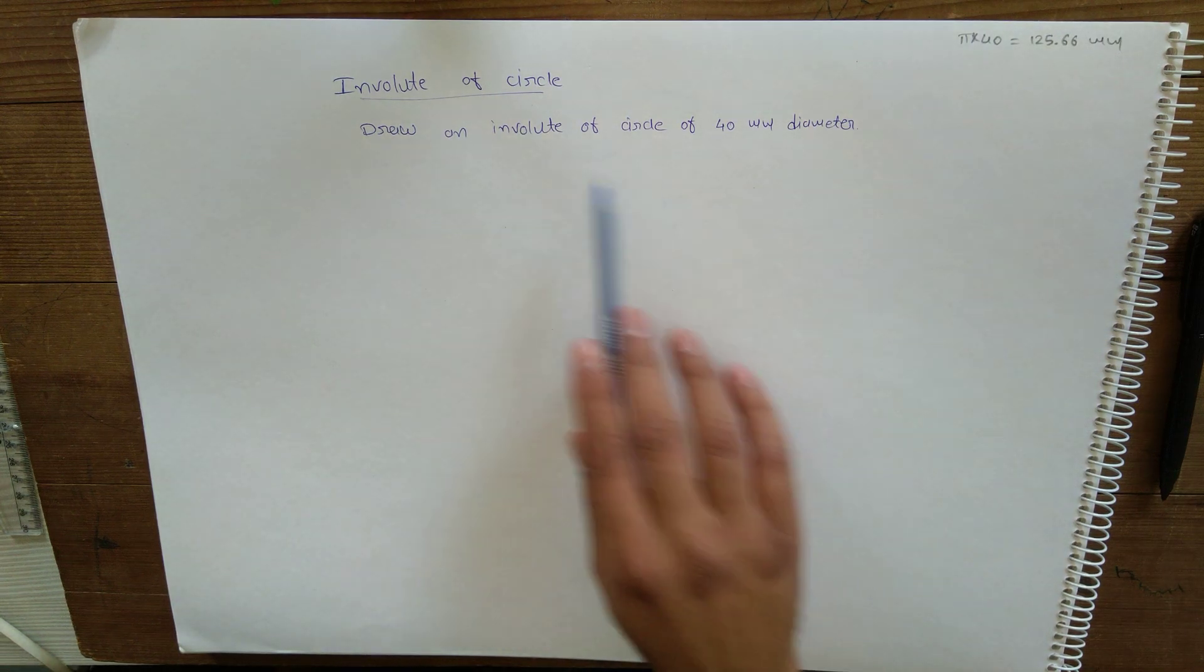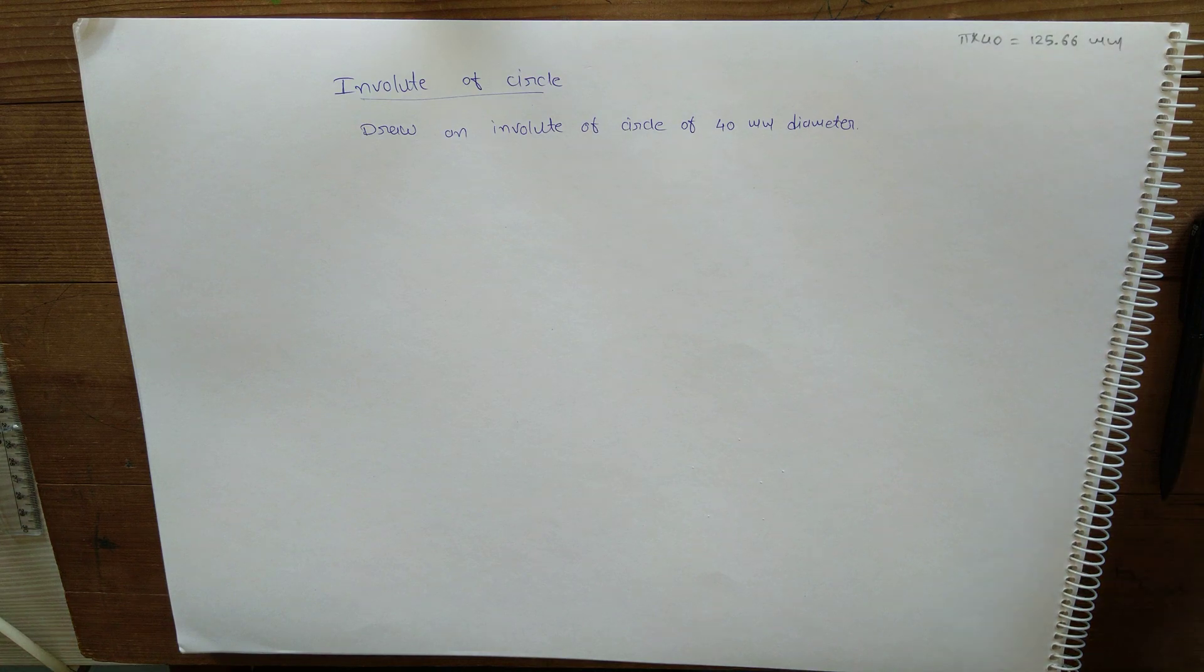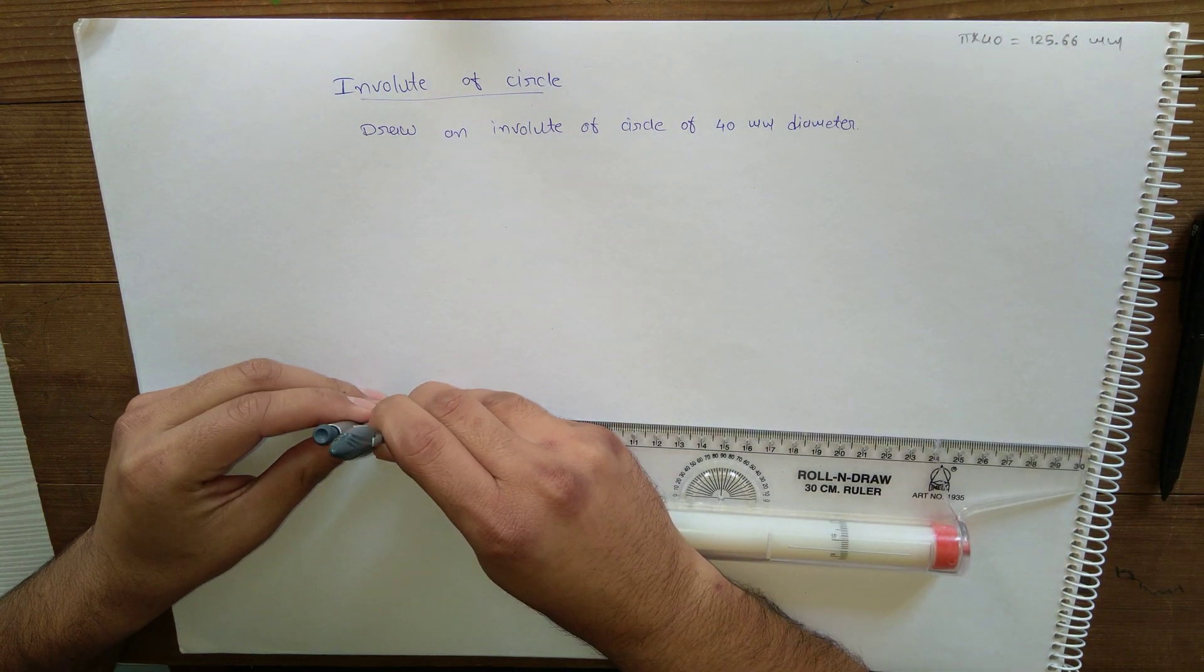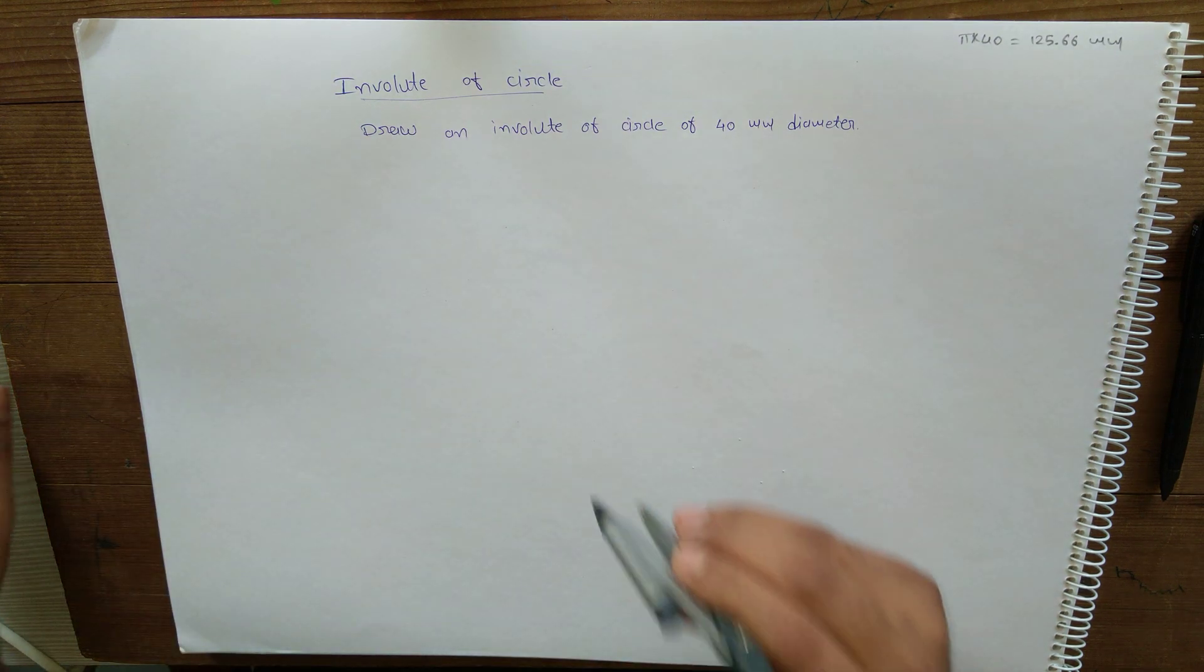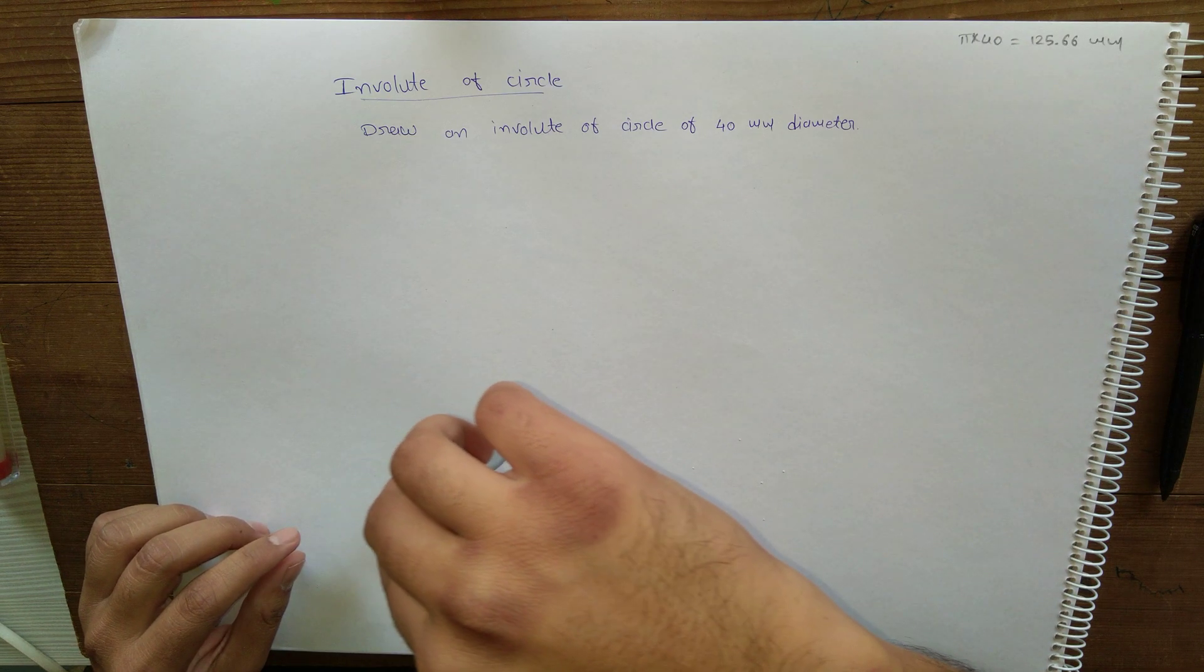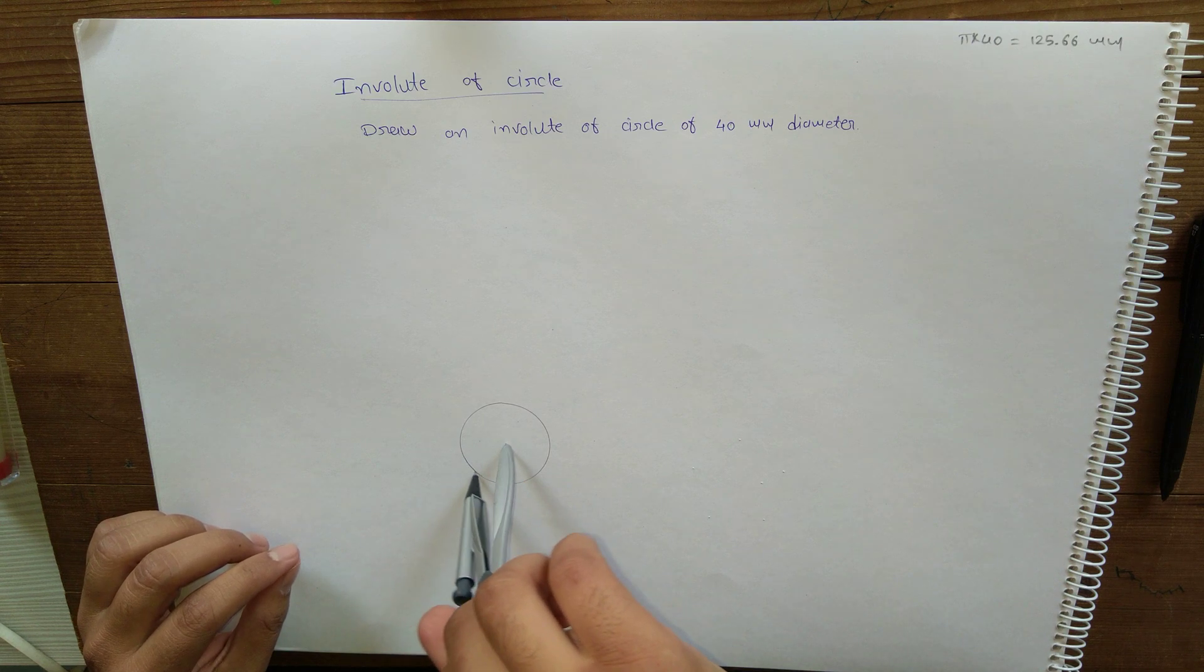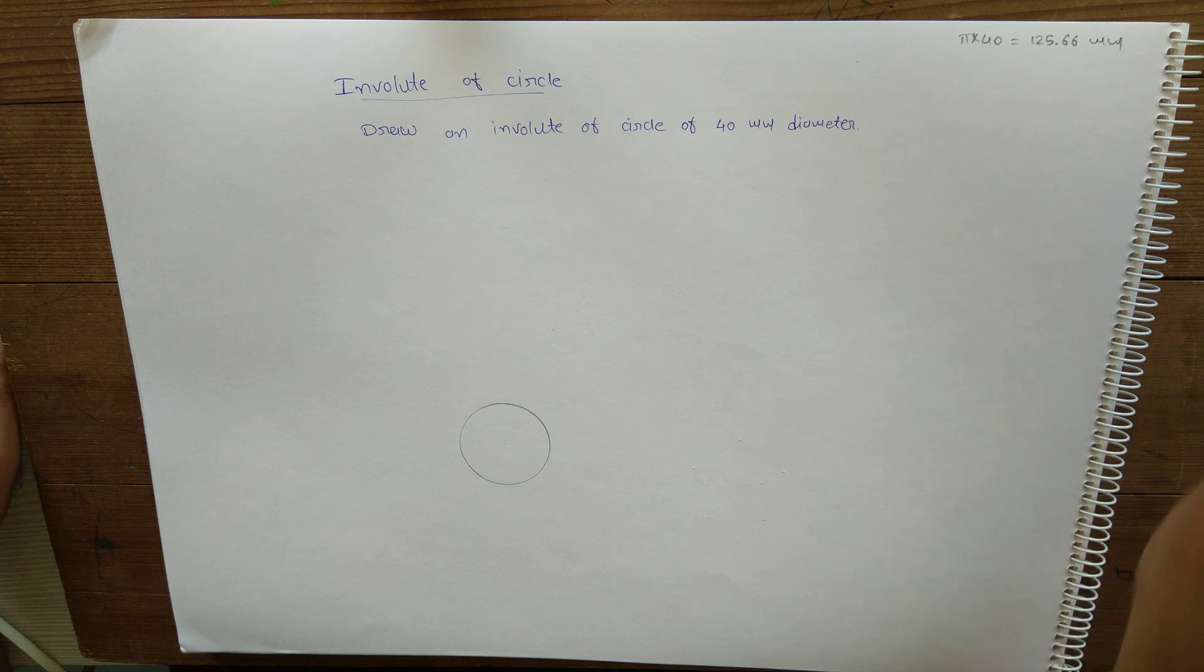Here is involute of circle. For that I'm going to construct involute of circle of 40mm diameter, 20mm radius. First draw a circle of 20mm radius or 40mm diameter. Here I'm going to construct involute for one convolution.